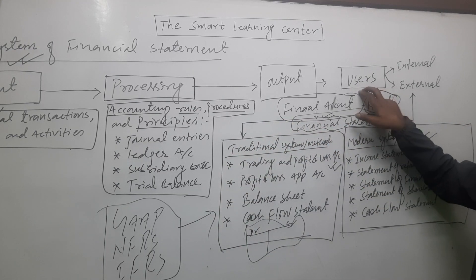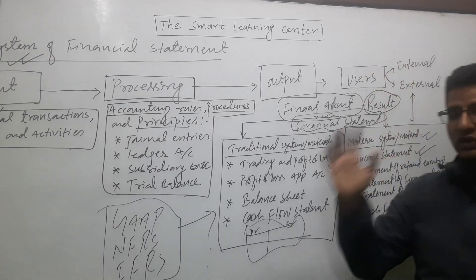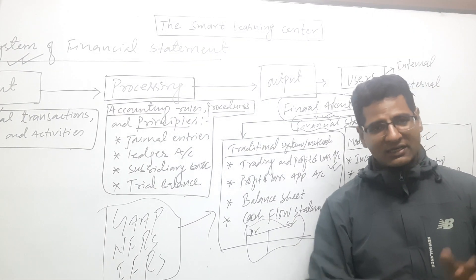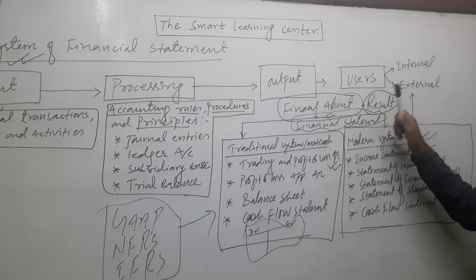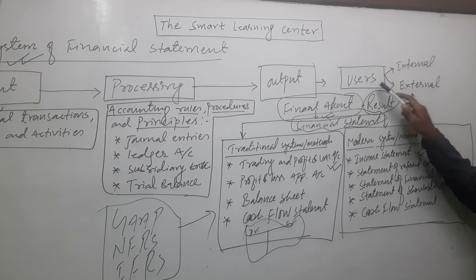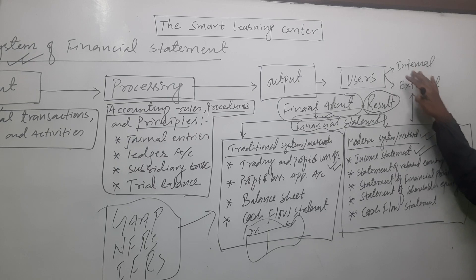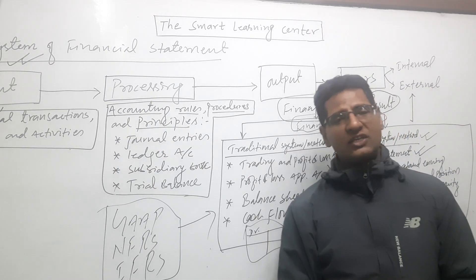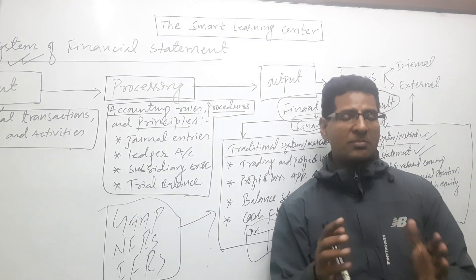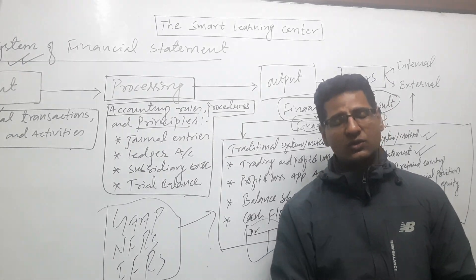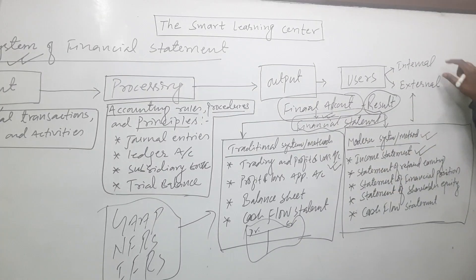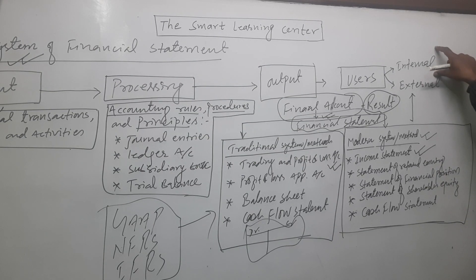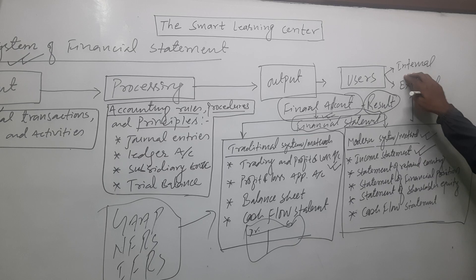Financial statements serve different users — the stakeholders who are directly or indirectly concerned with them. This financial statement is related to two types of users: internal and external. Internal stakeholders are directly related to the company, the business, the enterprise, and its financial strength. Internal users include management, employers, and employees.